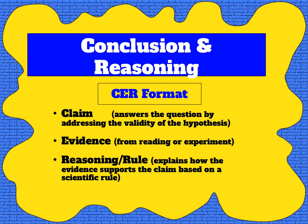When all of the analysis is complete, we have what we need to state our claim, which is the answer to our experimental question. Scientists generally follow this with a long explanation supporting the claim; we will only be asking you to write a paragraph. Because we are novice scientists, we will be using the CER format as our guide. It should start with a clear claim statement, followed by a methodical presentation of evidence and reasoning using an established scientific rule, showing our understanding of the experiment and how it connects to our class content.